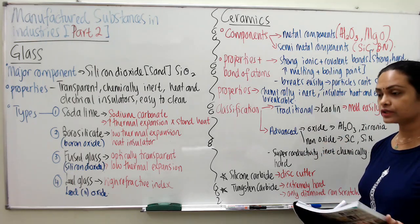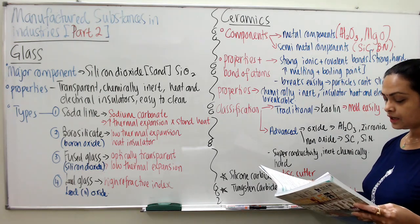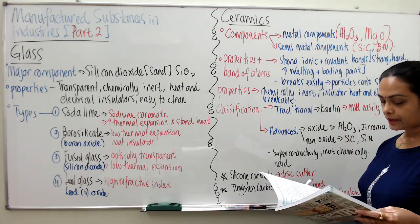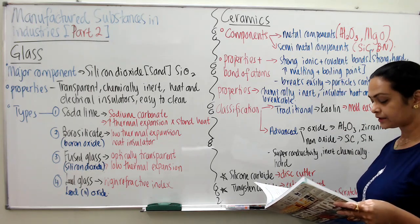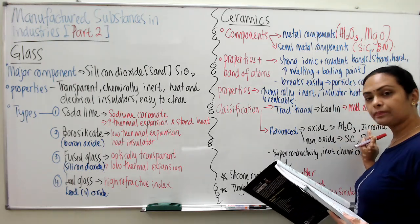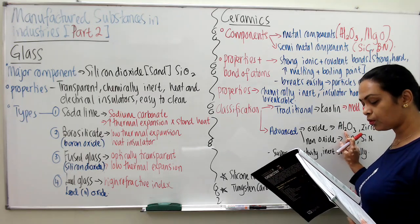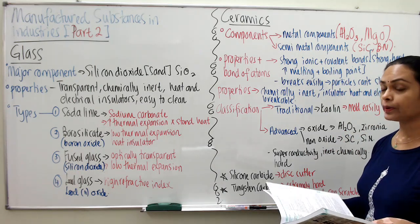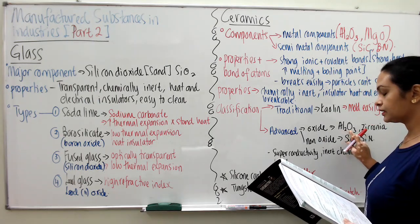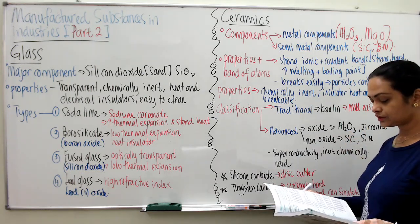Two advanced ceramics to discuss are alumina and zirconia. Both have high hardness and high density. Zirconia is especially used to make dental implants. Alumina is used as a bone substitute during orthopedic operations.